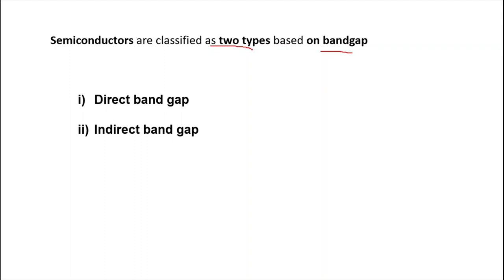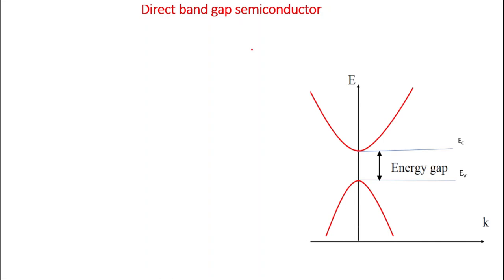First we'll see a direct bandgap semiconductor. Looking at this graph, it shows the relation between E (energy) and k (wave number or wave vector). In the E versus k graph, the upper part refers to the conduction band where conduction electrons are present, and the lower part shows the valence band where valence electrons or conduction holes are present.